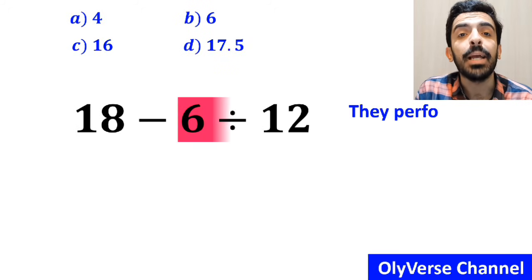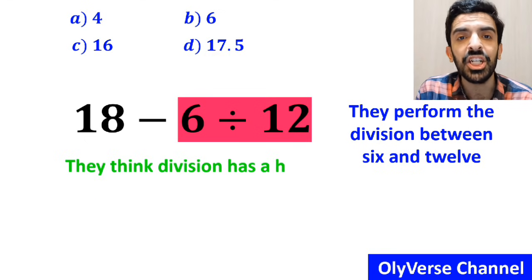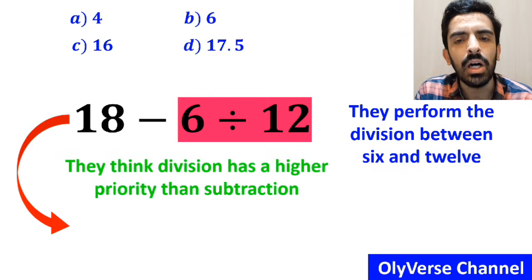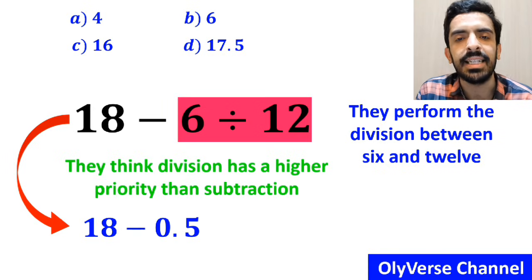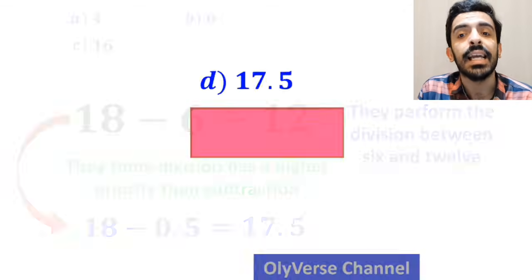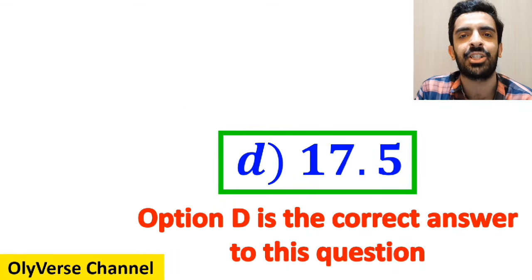And the final step, they perform the division between 6 and 12 because they think division has a higher priority than subtraction. So, they simplify this expression to 18 minus 0.5 which ultimately gives them the answer 17.5. And immediately, they conclude that Option D is the correct answer to this question.